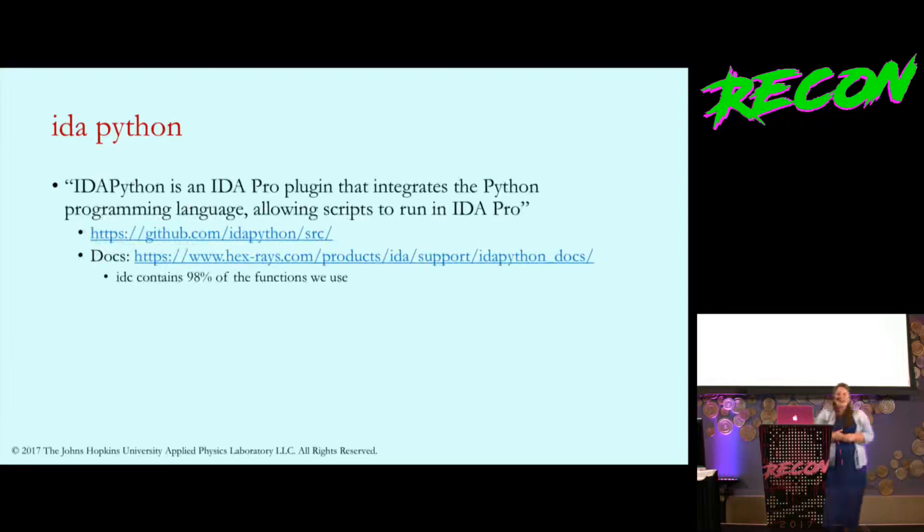So first off, what is IDA Python quickly? It's a way for you to automate different functionalities within IDA Pro by leveraging Python. It's open source on GitHub from Hex-Rays. Here's my tip: about 98% of all the code I'm going to go over today comes from just that IDC module. If you don't really know where to start, just click on IDC and start looking for the functions you need there.